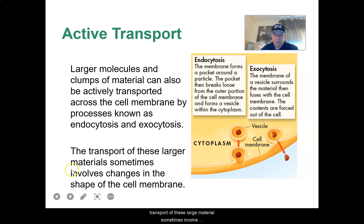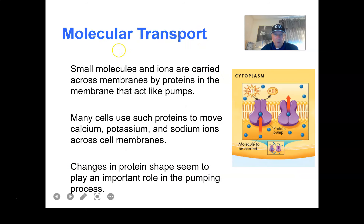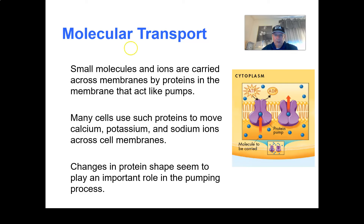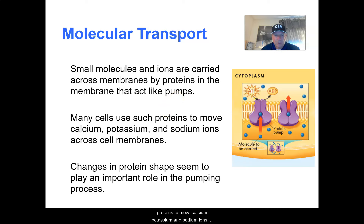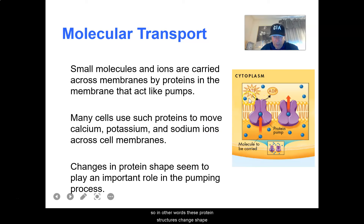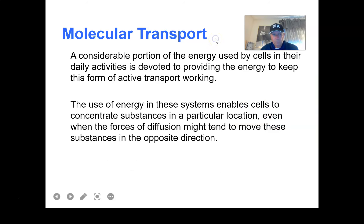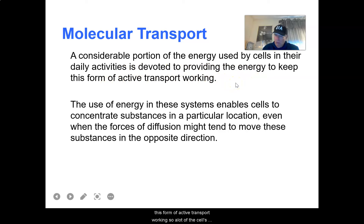The transport of these larger materials sometimes involves a change in the shape of the cell membrane. Some molecules and ions are carried across membranes by proteins that act like pumps. Many cells use proteins to move calcium, potassium, and sodium ions across the cell membrane. Changes in protein shape seem to play an important role in the pumping process — these protein structures change shape, and that takes energy. A considerable portion of the energy used by cells in their daily activities is devoted to keeping this form of active transport working.